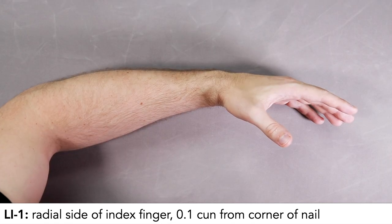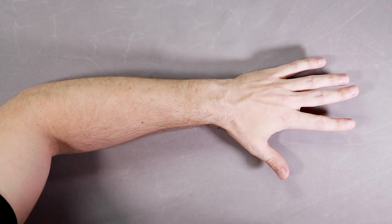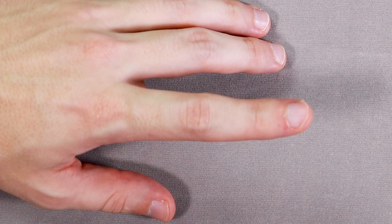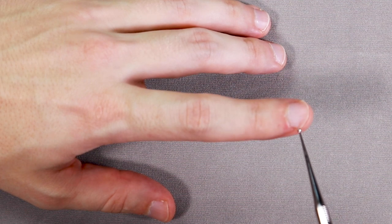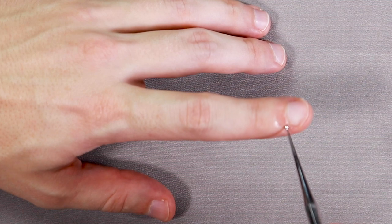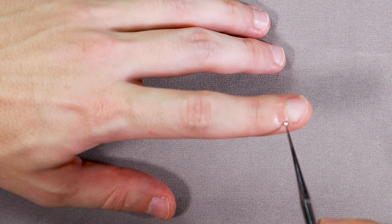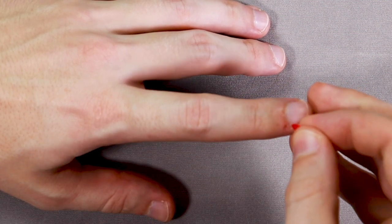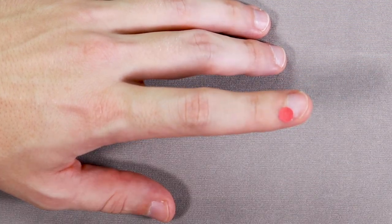Large Intestine 1 is located on the radial side of the index finger next to the corner of the nail. I'm going to lay my hand flat just so we can see this one a little bit easier. We're taking these lines formed by the proximal border of the nail and the radial border of the nail, and where they intersect is LI1. For needling this point, we're going into the fleshy area 0.1 cun from the corner of the nail. But if we're putting a sticker on, part of the sticker is going to cover the nail just because stickers are bigger than needles.